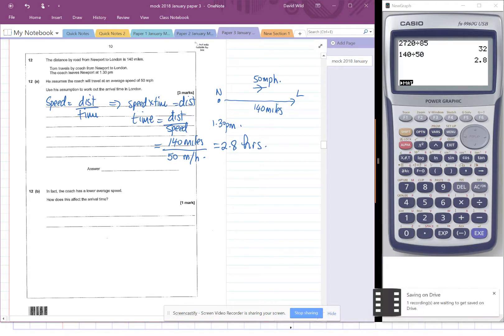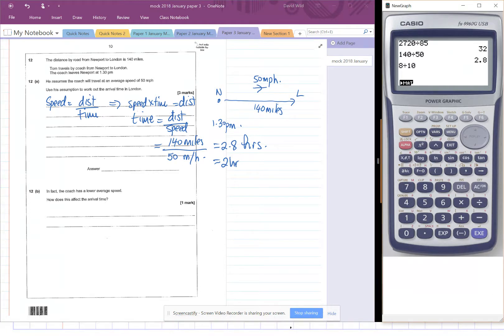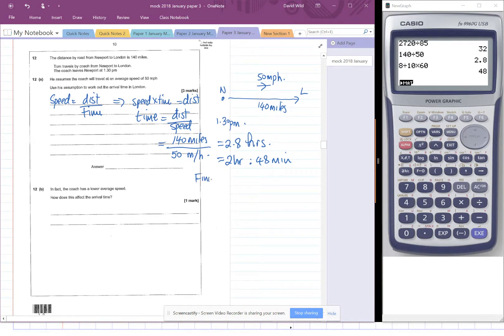Right. Now what is 2.8 hours? Well, this is actually 2 hours and 8 tenths of an hour. So what's 8 tenths of 60 minutes? 48 minutes. So that's 2 hours and 48 minutes. Okay. But we started at 1:30. So the finishing time is 1:30 plus 2 hours and 48 minutes. And that, of course, gives 4 hours and 18 minutes. So 4:18 p.m.